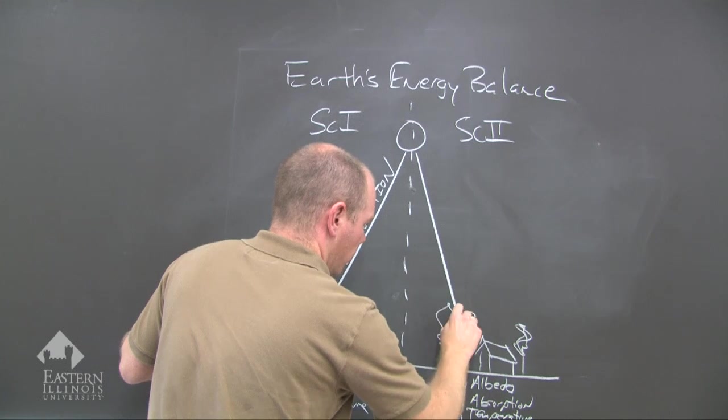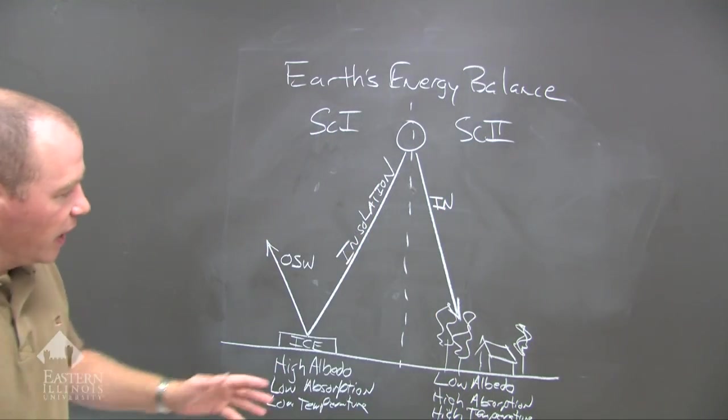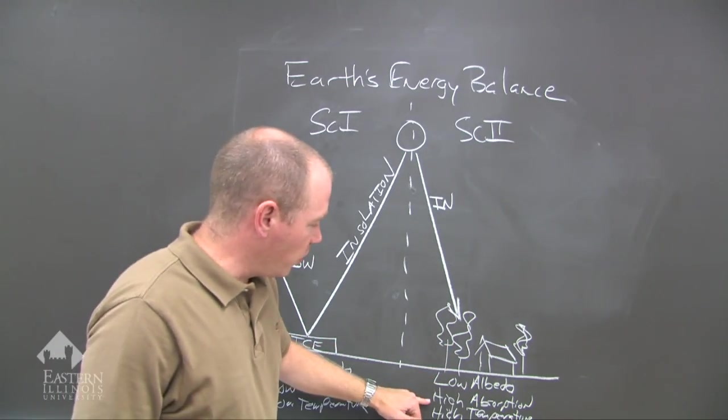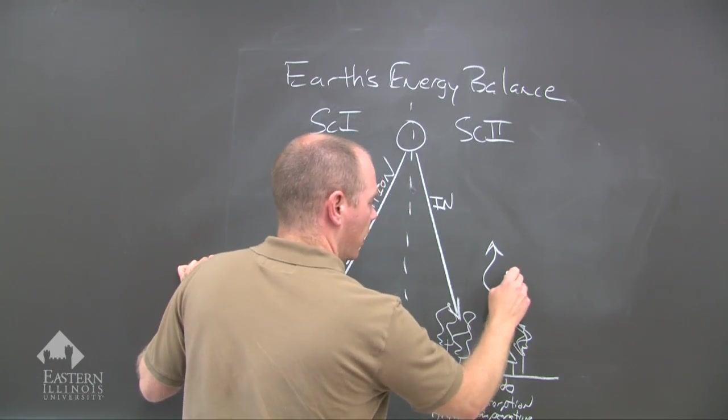We have insolation, and I'm going to abbreviate it here, insolation IN, hits the surface of a low albedo, therefore you have high absorption, and then you start to emit long wave radiation.